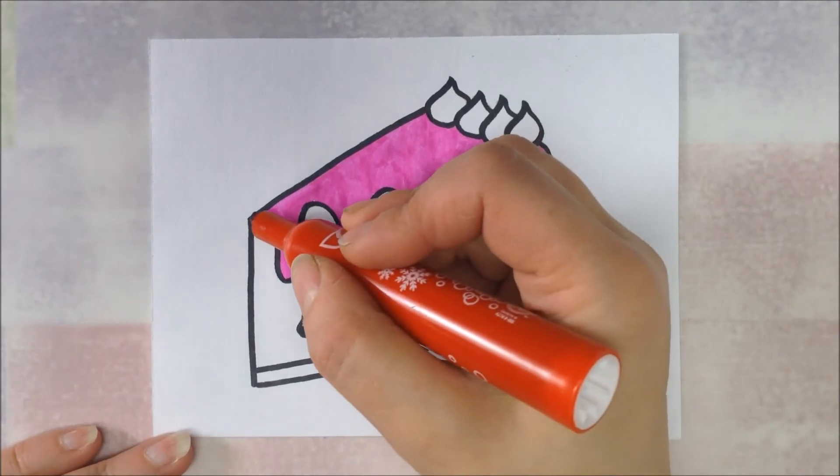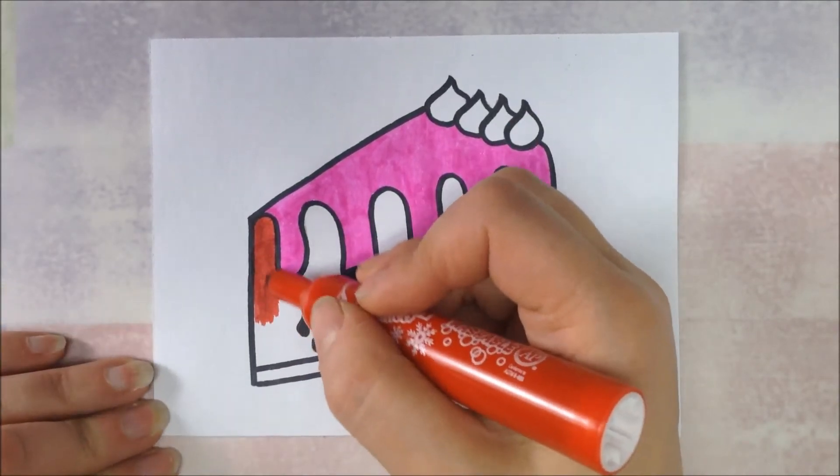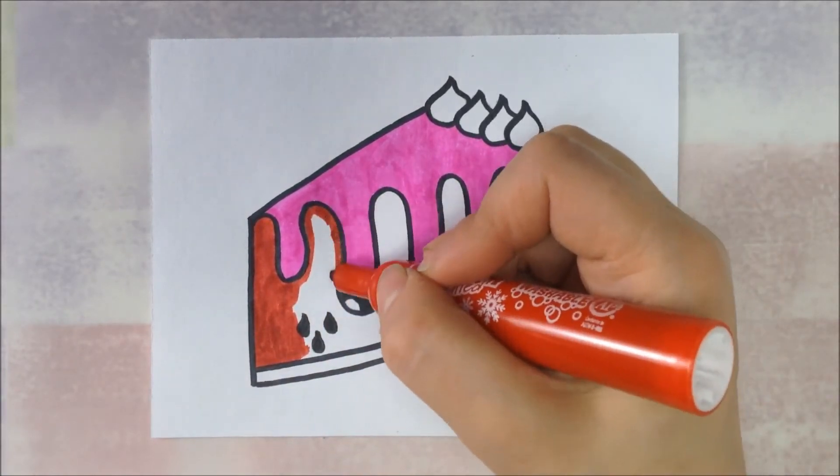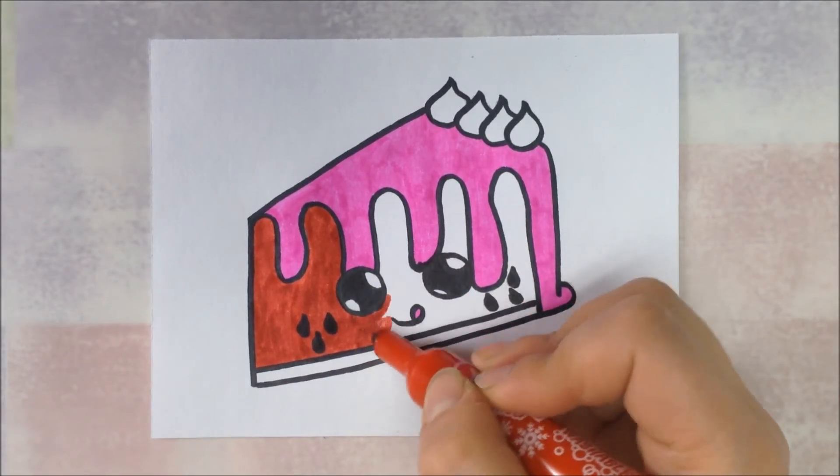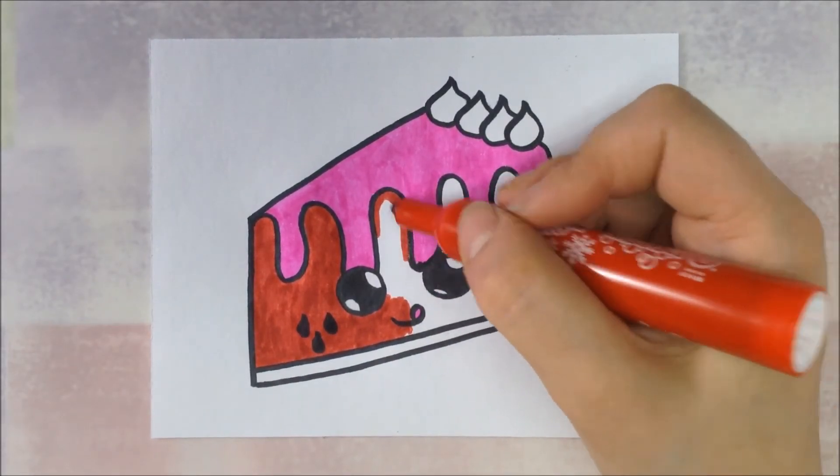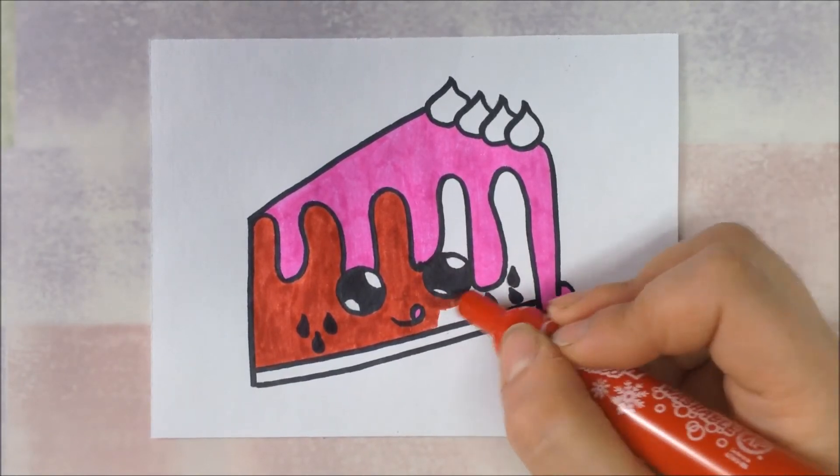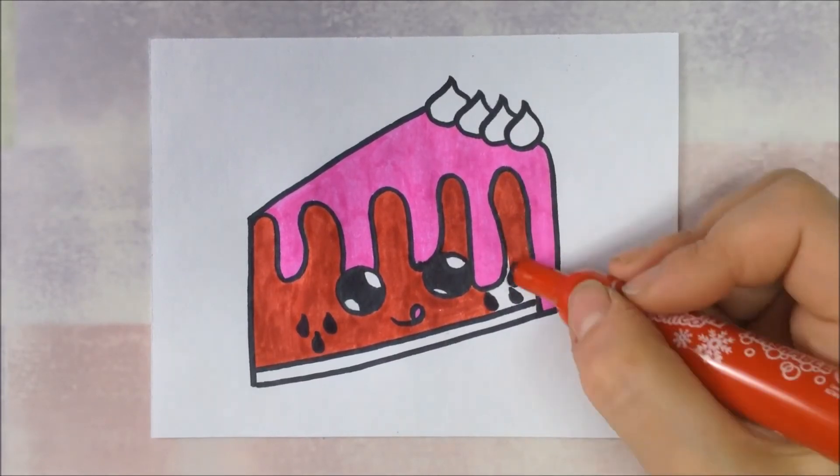And now I'm going to do red for the watermelon part. And again, I'm going to speed that up so you don't have to watch me color. Too long anyway. And you can go right over the black seeds. The permanent marker won't smear so you can go right on top of them. And the red doesn't make it change.